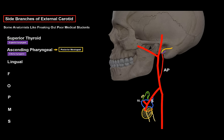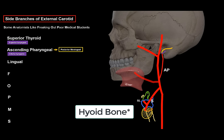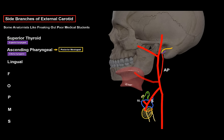Next is the lingual artery, also one of the anterior branches of the external carotid. It branches off at the level of the hyoid bone, pierces through the muscles of the tongue, and ends as the deep lingual artery, supplying the whole tongue with blood. It gives off the dorsal lingual artery for the mucous layer of the dorsal tongue, as well as the sublingual artery supplying the mucosa at the floor of the mouth and the sublingual gland.